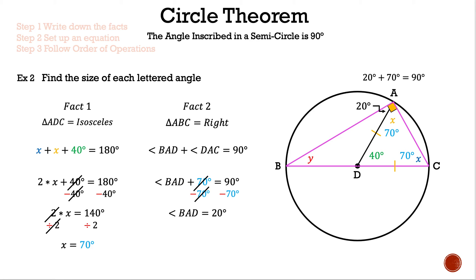Now solving for y: triangle BAD is an isosceles triangle, so angle y equals the angle we just found, 20 degrees, because they are opposite the radii. We have found x = 70° and y = 20° for example two.